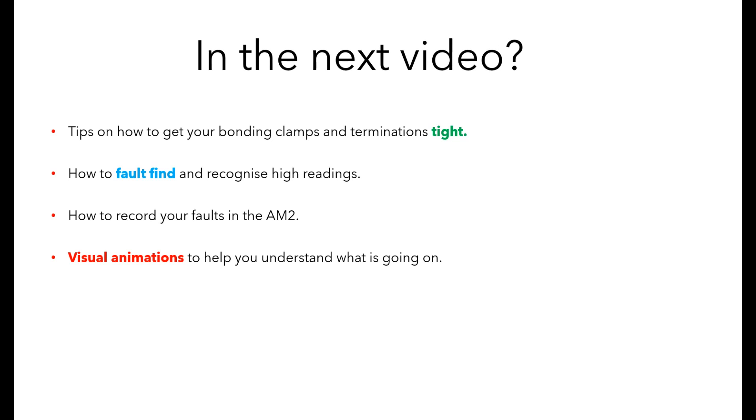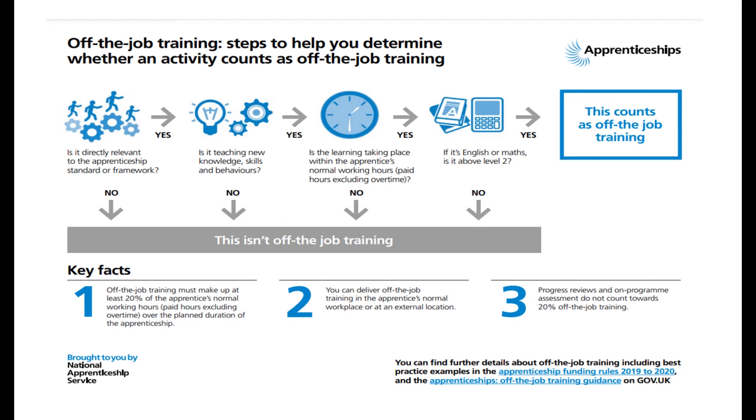Well that's it for part two of this video on continuity of protective conductors. In part three of this video we will move on to typical faults on a bonding cable, how to ensure tight terminations, how to find and recognize high readings using visual animations, and finally record those results in your AM2. Don't forget that this video can count towards your off the job training for your apprenticeship or just for your own CPD. Please ensure that you like, share, and subscribe so that everyone can benefit from this content. Thank you and take care.